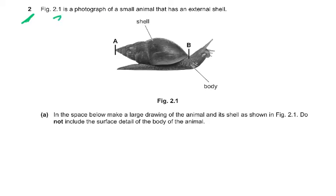Figure 2.1 is a photograph of a small animal that has an external shell. Parts labeled are P, A, B, and body. In the space below, make a large drawing of the animal and its shell as shown in Figure 2.1. Do not include the surface detail of the body of the animal.